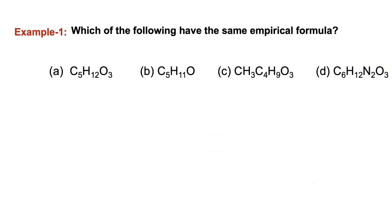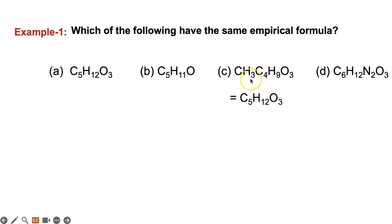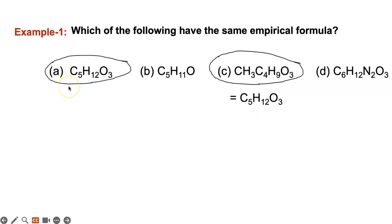Now we're going to do problems. Example 1: which of the following have the same empirical formula? Now if you quickly look at it, none of them seem to have the same empirical formula. But you will see that the carbons are split in two places as well as the hydrogens — you have to put them all in one place. So you have 5 carbons and 9 plus 3 is 12 oxygens. Now you can see those two are the correct answer. Write all the questions in your notebook so that when you review, you can look over them.